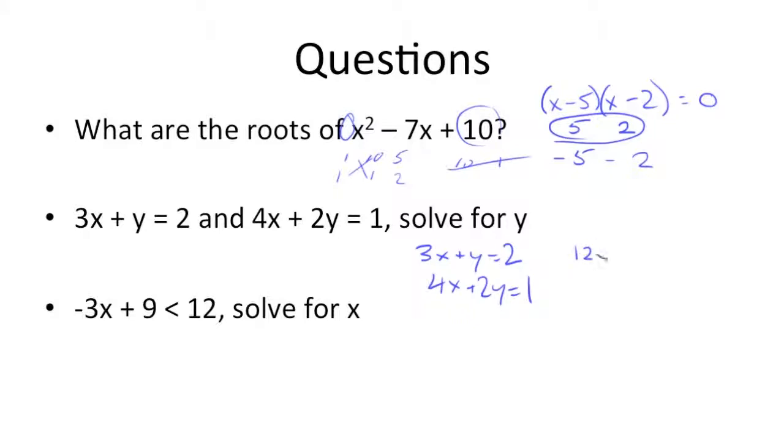we get 12x plus 4y is equal to 8. Doing the same for the bottom but using 3, we get 12x, 3 times 2 is 6y, and 3 times 1 is 3.